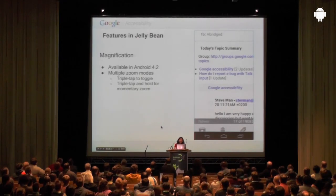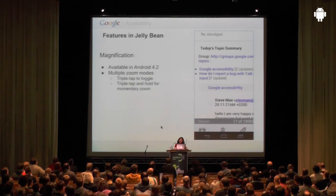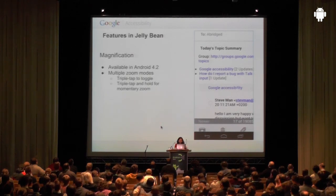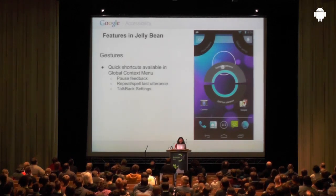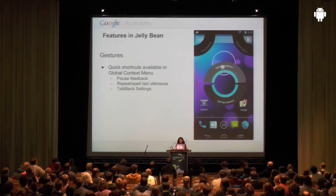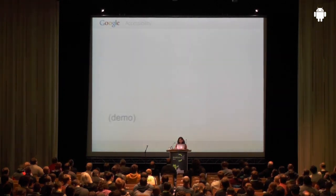We also added magnification, available from version 4.2 onwards. Large text is already available, but magnification lets you zoom in much more by triple tapping the screen. You can work on the phone normally in zoomed mode and triple tap again to return to normal. Triple tap and hold lets you temporarily zoom and pan around, and lifting your finger returns to normal state. Additionally, there's a global shortcut — using an L-shaped gesture and tap — to quickly pause or suspend TalkBack, repeat the last spoken word, or spell it out.